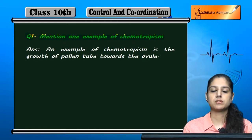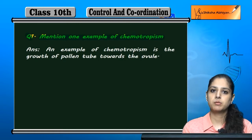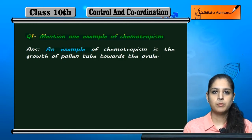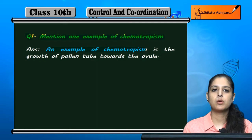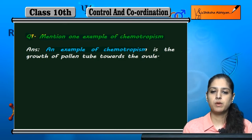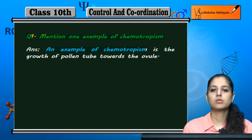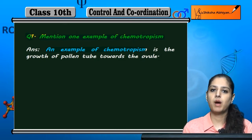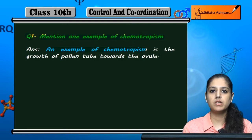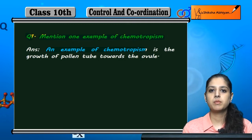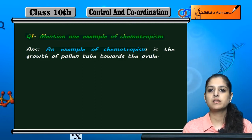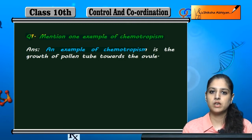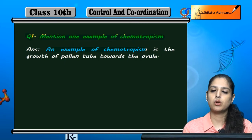Chemotropism ka example dena hai. Chemotropism matlab movement of plant parts — plants ke kisi part ki movement kisi chemical ya chemical stimuli ki taraf hoti hai, to isko chemotropism kehte hai.